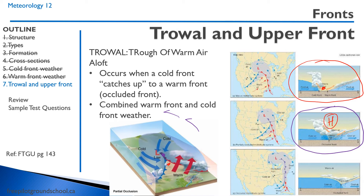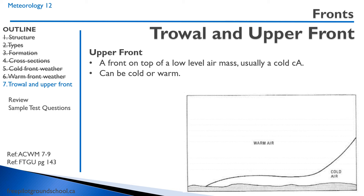Eventually the system equalizes — you have cold air and cool air at a considerably higher altitude, the weather clears up, and the warm air remains above. We can also have upper fronts, which occur when you have a front on top of a low-level air mass. The front sits on top of this cold air mass below. The frontal weather occurs aloft, but since cold air is below, it may still be freezing cold until that bottom air mass clears out.